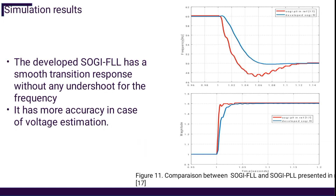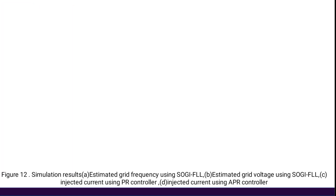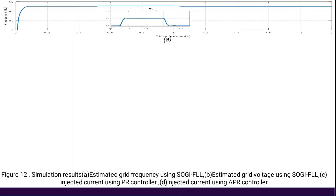These are the simulation results of the developed SOGI-FLL compared to the SOGI-PLL presented in another reference. The developed SOGI-FLL has a smooth transition response without any overshoot for the frequency, and it also has more accuracy in voltage estimation. This figure represents the frequency estimation using the SOGI-FLL block, which is directly used by the resonance controller to obtain adaptiveness to the grid frequency. The SOGI-FLL presents a fast transient response and smooth dynamic behavior; the step starts at 0.5 seconds and ends at one second.